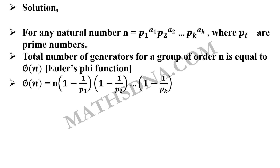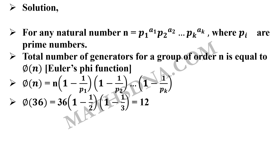Now, 36 can be written as 6 squared, which is 2 squared into 3 squared. So the two prime numbers are 2 and 3. Therefore, phi of 36 equals 36 into (1 minus 1 by 2) into (1 minus 1 by 3). That simplifies to 12, and hence our correct answer is option B: 12.